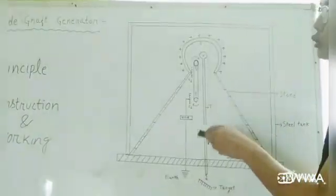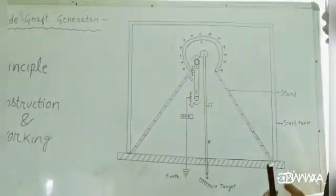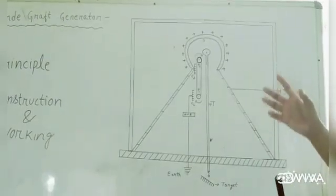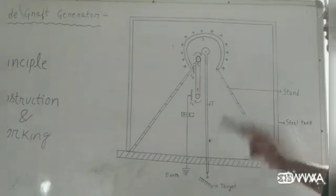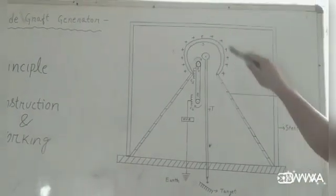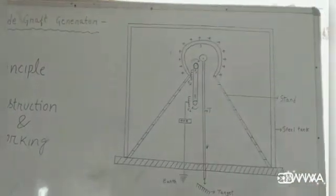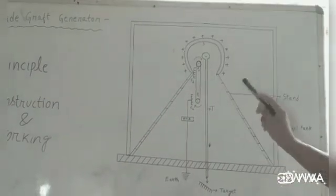The belt keeps rotating continuously, so the charge on the shell increases continuously. When the charge on the spherical shell is very high, leakage due to ionization of the surrounding air also increases. To prevent this, the generator is enclosed in an earthed steel tank under pressure.